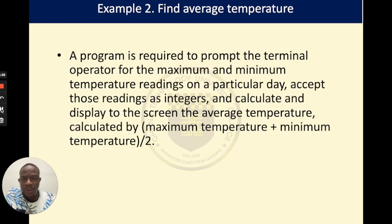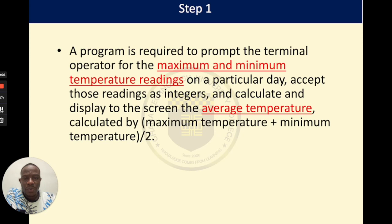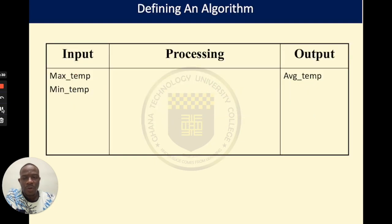Now let's consider another example. The example states: a program is required to prompt the terminal operator for maximum and minimum temperature readings on a particular day, accept those readings as integers, and calculate and display to the screen the average temperature — calculated as maximum temperature plus minimum temperature divided by 2. In this case, we are going to use the same approach. Let us identify the inputs: inputs are what you expect your software to receive to complete the task. Here, the problem says we require the maximum and minimum temperature readings from the operator. Our output is going to be the average temperature. In our table we outline: max_temp, min_temp, and average_temp.